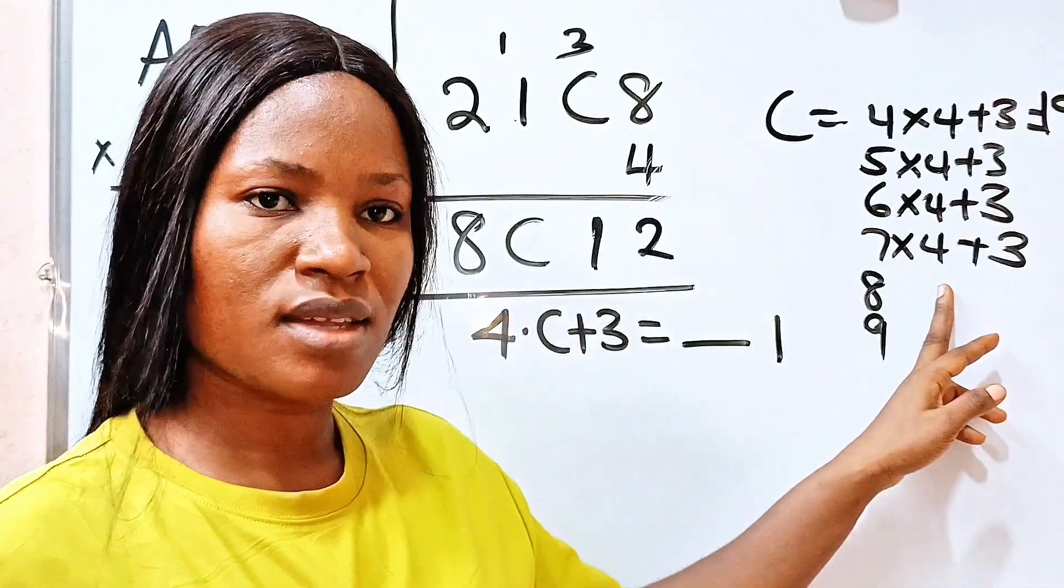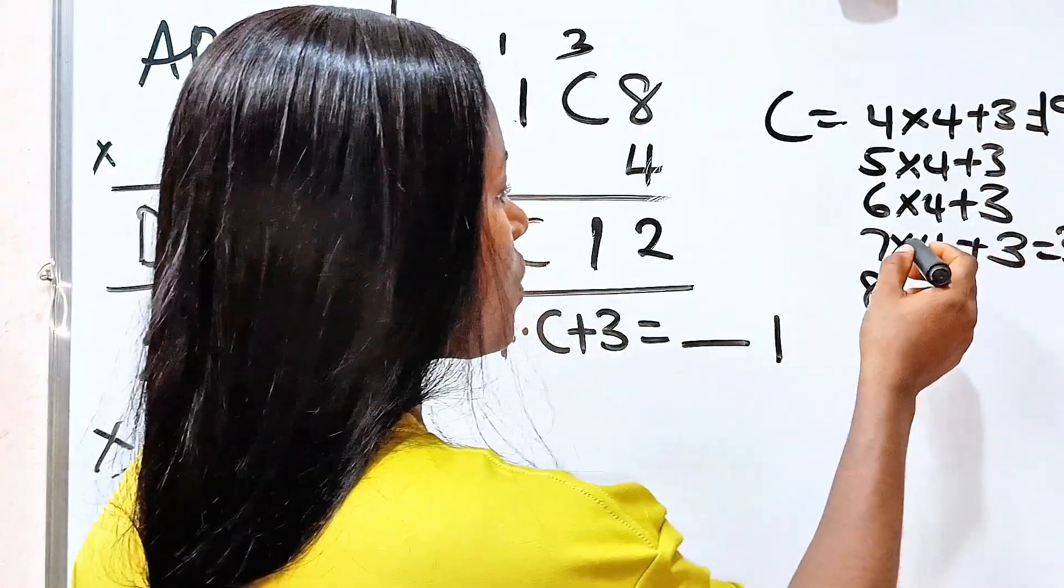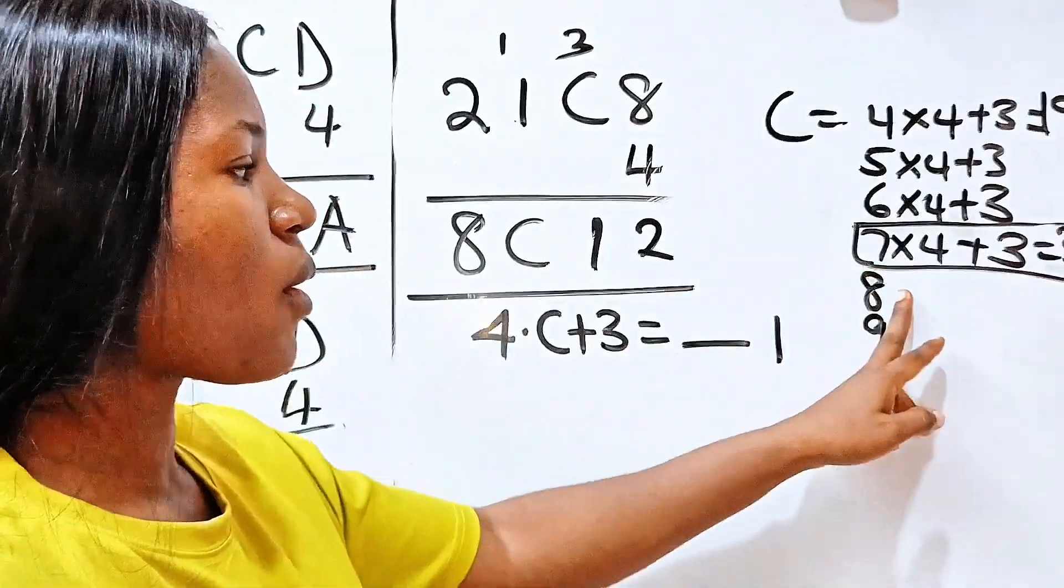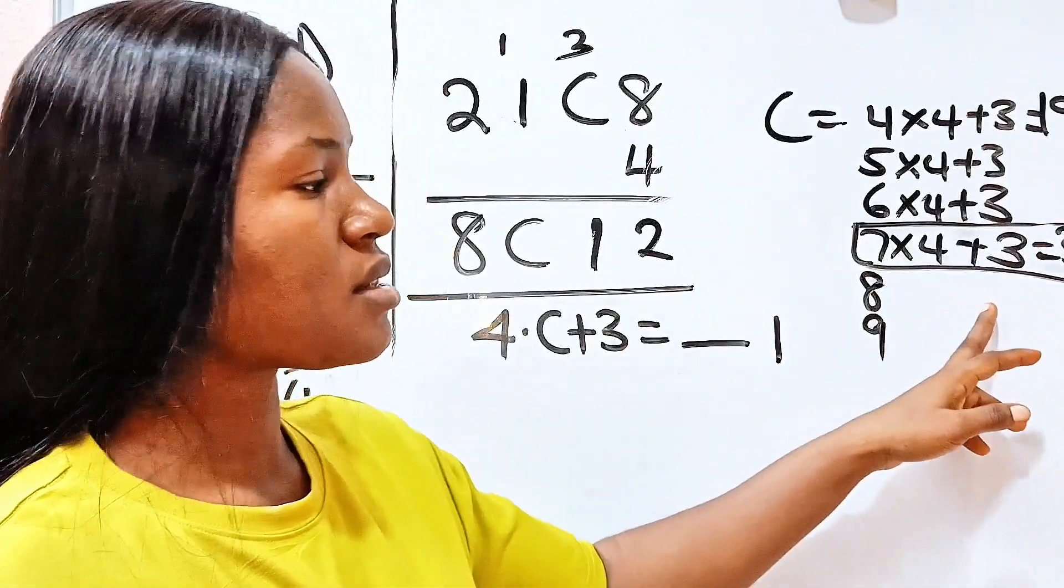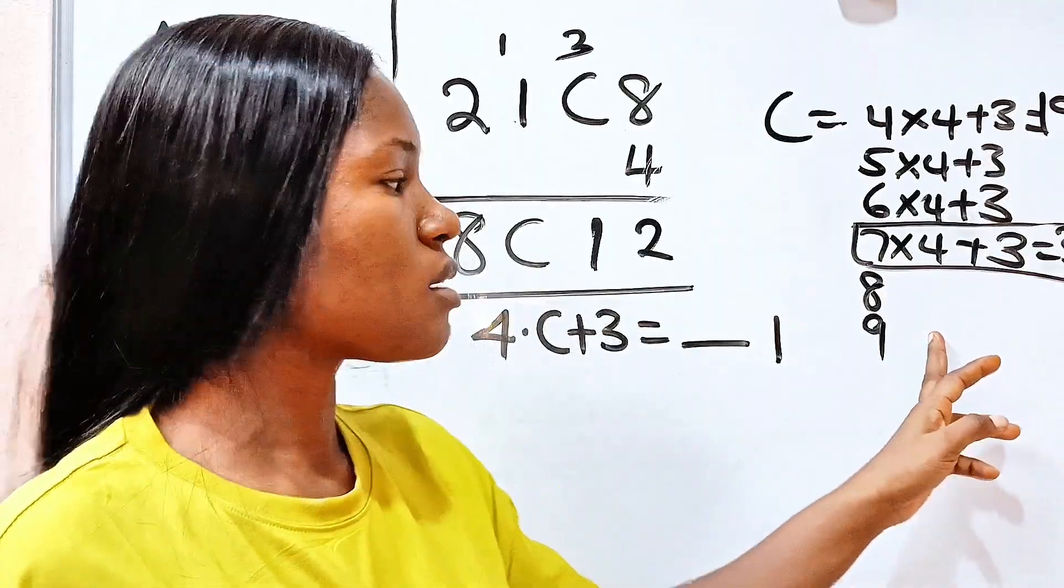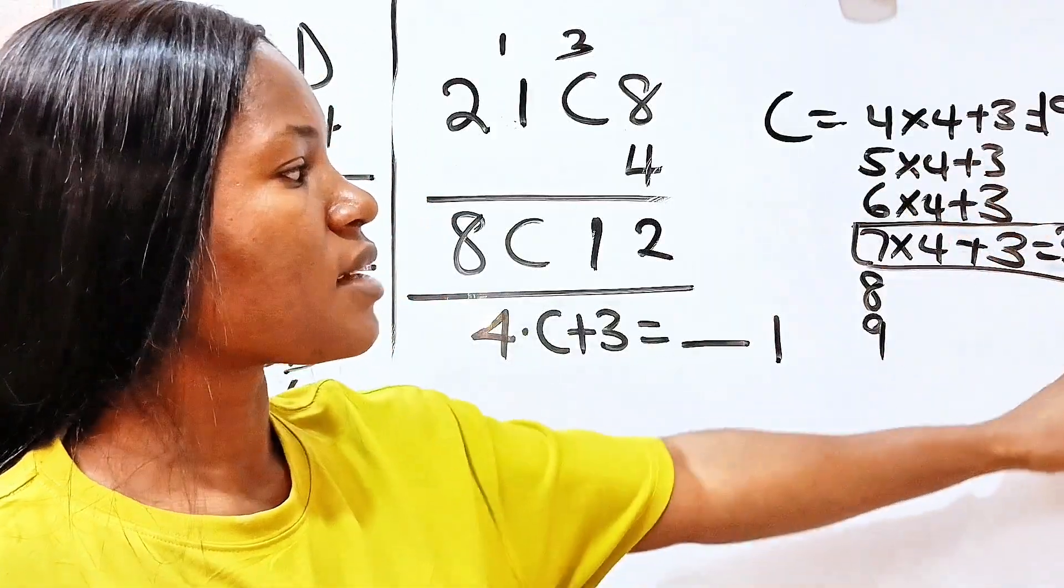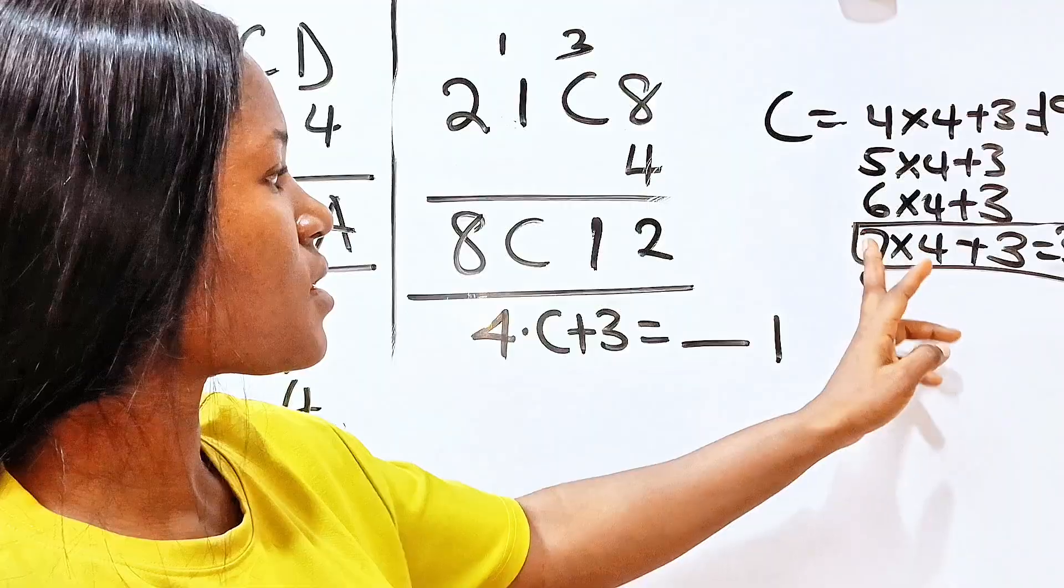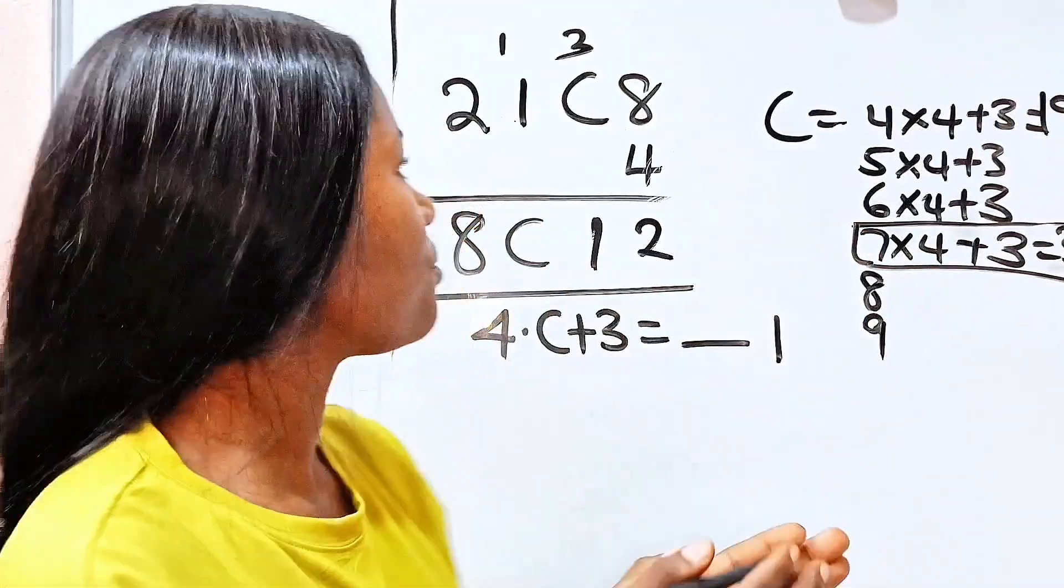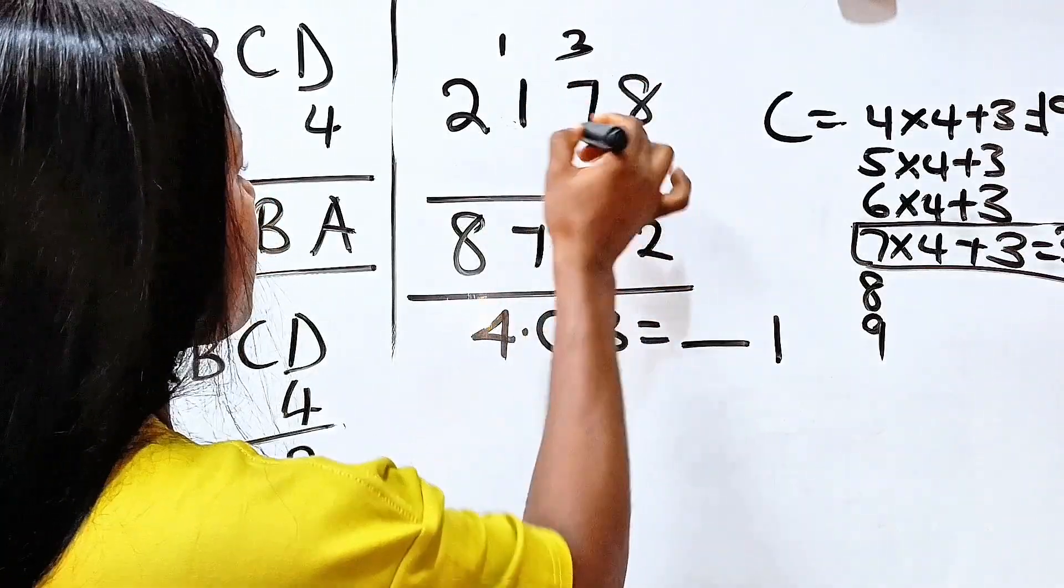Let's try 7. 7 times 4 is 28. And 28 plus 3 is 31. So this can go, but we are not yet sure. Let's check other ones. Now 8 times 4 is 32. And 32 plus 3 is 35. No. 9 times 4 is 36. And 36 plus 3 is 39. So you can see that the only thing that satisfies our equation is 7. So it simply means that our C is 7. So this is 7 and this is 7. Now let's see. We have 2, 1, 7, 8. And we have 8, 7, 1, 2.